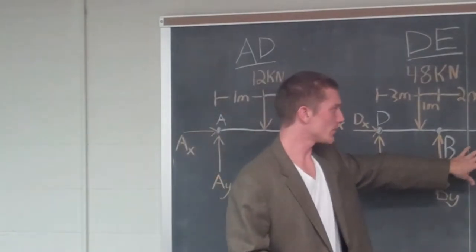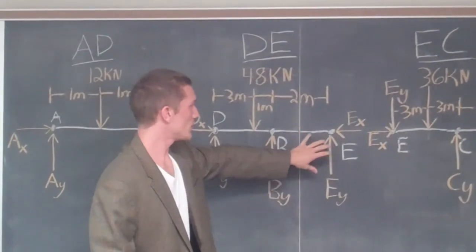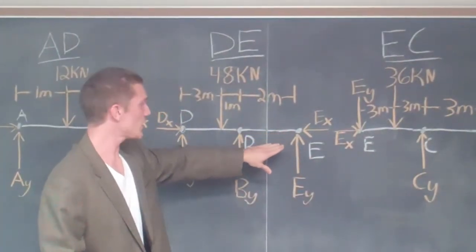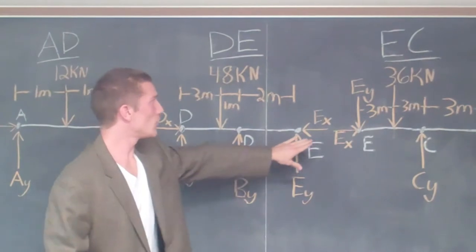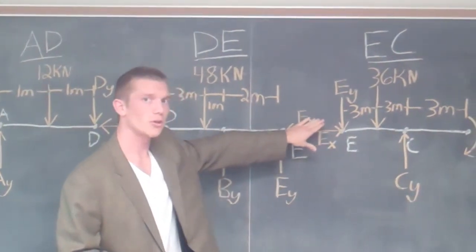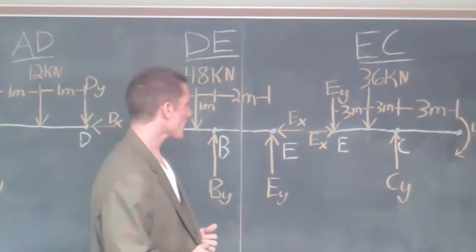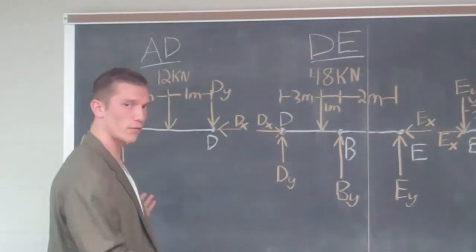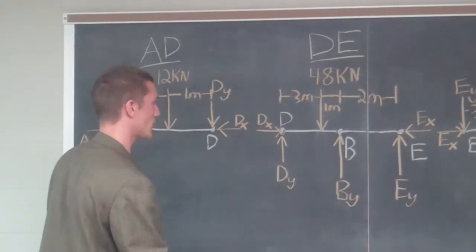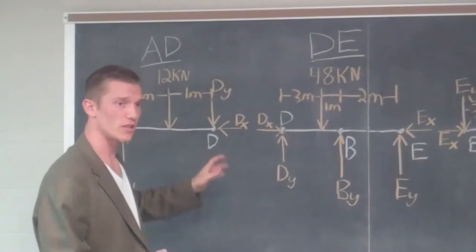Over here, we have the same problem. We have to break it up. E has an X component, and E has a Y component. On EC segment, we have those same components, but going in opposite directions. Now, we can see all the things from our free body diagram are stated right here. The next part is to start solving for each of these components.